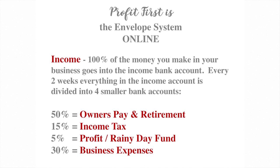5% goes into your profit and rainy day fund account, and 30% goes into business expenses. All of those numbers total 100%.